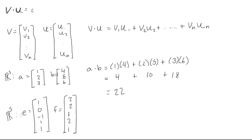And when we take the dot product of e dot f, we do the same thing. We say 1 times 2, plus the second components, 0 times 2, plus negative 1 times 1, plus 1 times 2, plus 1 times 1.